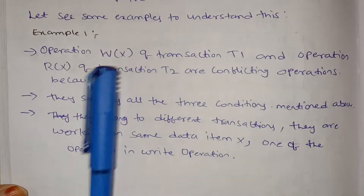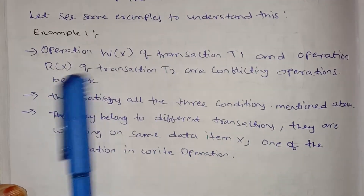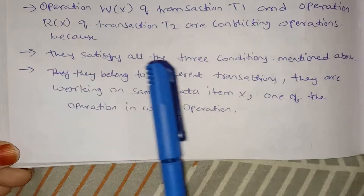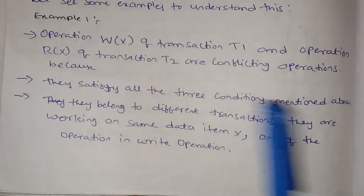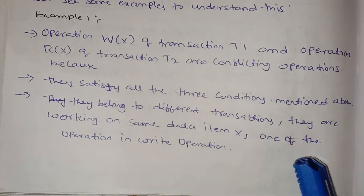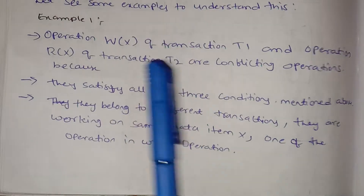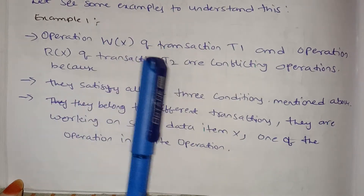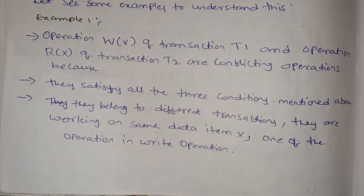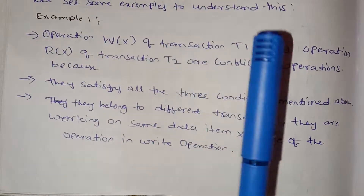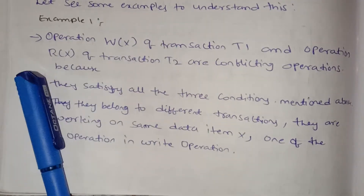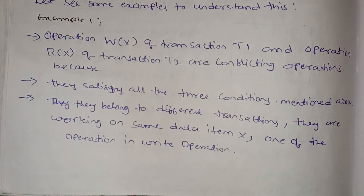Example 1: conflicting operations. Both operations are W(X) and R(X) — the data items are the same. They belong to different transactions T1 and T2. They are working on the same data item X. One of the operations is a write operation, so the condition is satisfied. This is a conflicting operation.